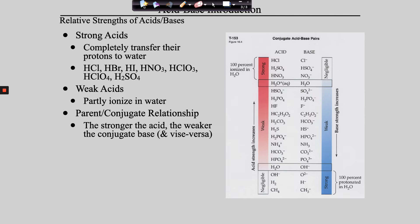Drawing a line in the sand: we know Arrhenius acids and bases, Bronsted-Lowry acids and bases, conjugate acids and bases, and the relationship between acid/base strength and conjugate strength. Grab your AP equation sheets. Before we get into the next part, there's one thing to make sure we're clear on: do you understand what amphoteric means? It means something can be either an acid or a base. You understand water is amphoteric, right? And water is not the only thing that's amphoteric.